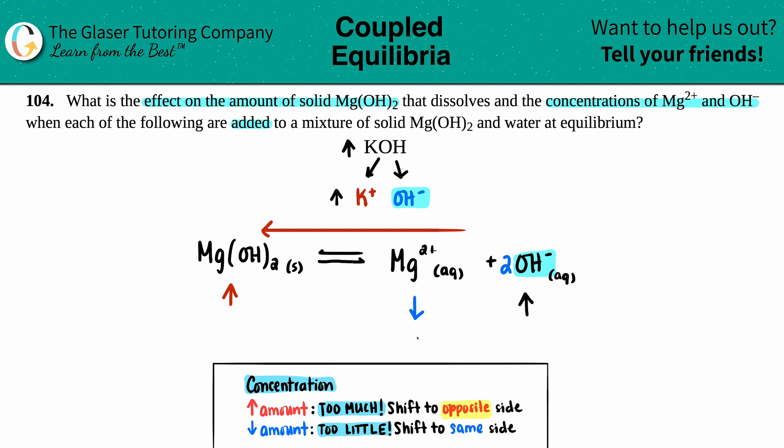And that's it. There are your three answers. So we have an increase in Mg(OH)2. We got a decrease in Mg2+. And we have that increase in OH- because that's what we made. And there you go.